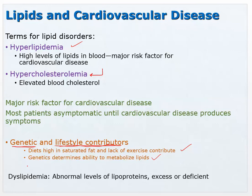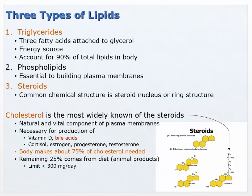Dyslipidemia is a term that means abnormal levels of lipids — it could be excess or deficient, but usually when we use it we're talking about excess. The three types of lipids: triglycerides, which have a glycerol backbone with fatty acids hanging from it — those fatty acids can be saturated or unsaturated.